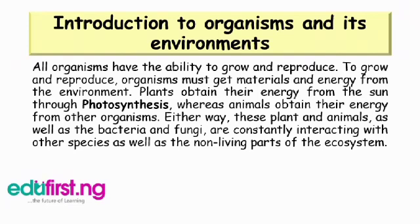Hello everyone, welcome to another segment on e-learning on eduforce.ngo.tv slash schoolmedia with the topic: organism and its environment. All living organisms have the ability to grow and reproduce. To grow or to reproduce, organisms must get material and energy from the environment. Plants obtain energy from the sun through photosynthesis, whereas animals obtain energy from other organisms. Either way, plants and animals, as well as bacteria and fungi, are constantly interacting with other species as well as the non-living parts of the ecosystem.